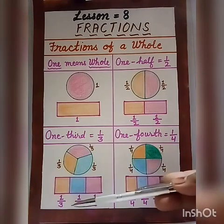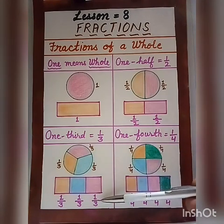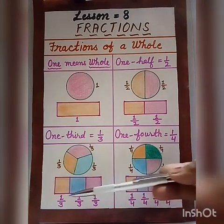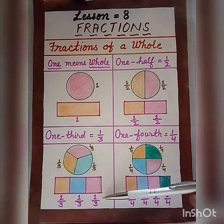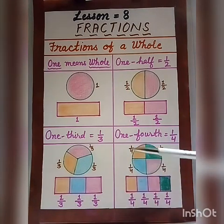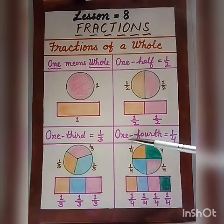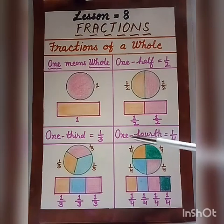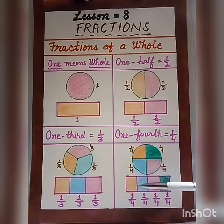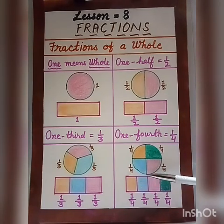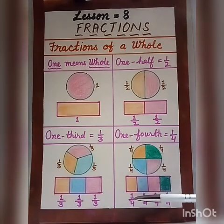Next is one third, and we write one third as one upon three. Three thirds make a whole - when we add one by three, three times, we get one. Next is one fourth. One fourth means quarter, and we write it as one upon four.